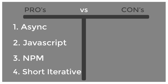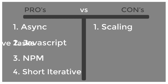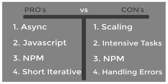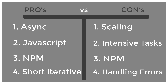Now for the cons: the biggest con is scaling — since it's single-threaded, it doesn't scale the best. The second con is it doesn't do well with CPU-intensive tasks. As good as NPM is in the open source world, it's also Node's biggest con because malicious code can potentially be injected into the network. And last, it doesn't do well with unhandled error exceptions that most developers don't know how to catch properly, nor is it easily implemented to make sure you're catching everything — more often than not, it'll just error out and kill the program.